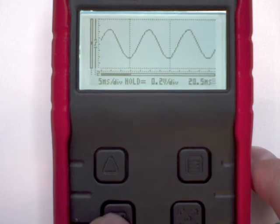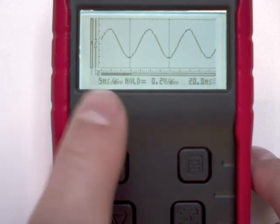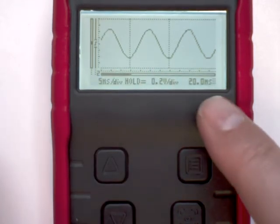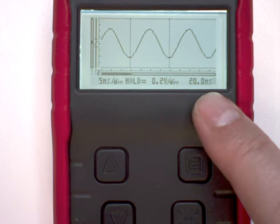And then in the lower right hand corner, we can see our readout, which is 20 milliseconds, so the duration of our period is 20 milliseconds.